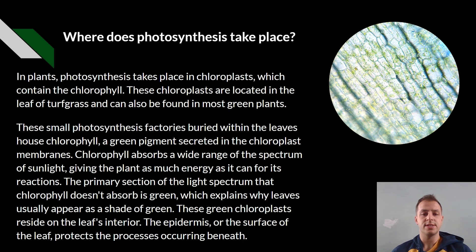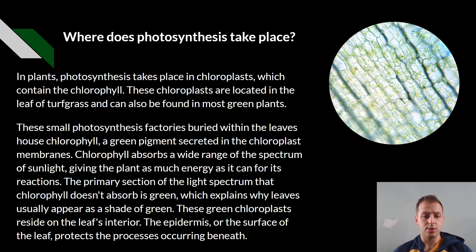So where does photosynthesis take place? In plants, photosynthesis takes place in the chloroplasts, which contain the chlorophyll. These chloroplasts are located in the leaves of turfgrass and can also be found in most green plants. These small photosynthesis factories buried within the leaves house chlorophyll.